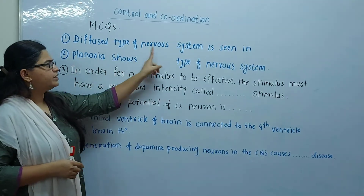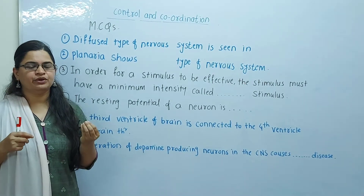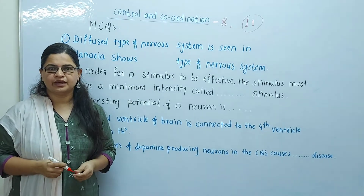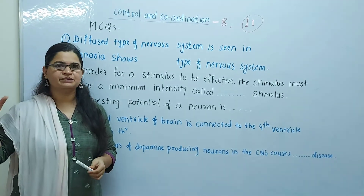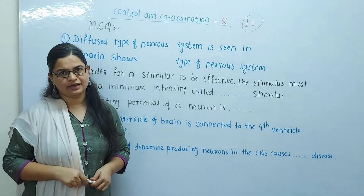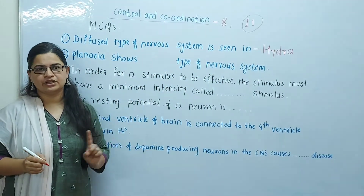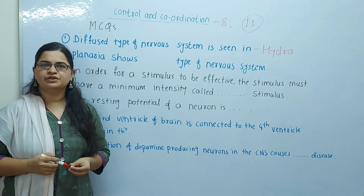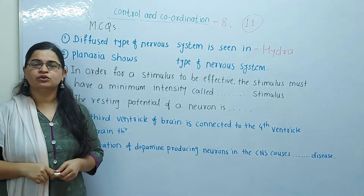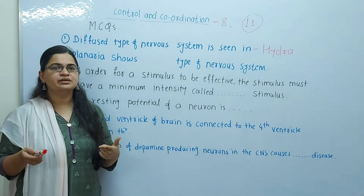The diffuse type of nervous system is seen in Hydra. This is a very primitive type of nervous system. The diffuse type of nervous system is not shown in higher classes of animals — it is from the most primitive ones. So the answer to the first question is Hydra.